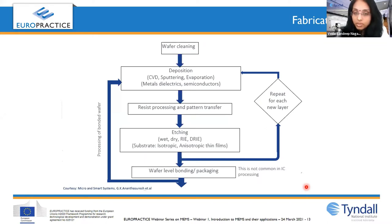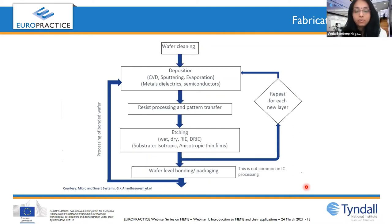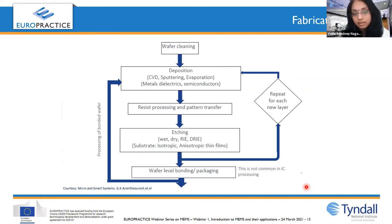These deposition, patterning, and etching steps are repeated for every layer in the device stack. An optional additional step not compatible with CMOS is wafer bonding, required when you want to attach layers that exist on two different substrates — for example, glass and silicon. Different methods exist: direct bonding, eutectic bonding, and others, depending on the application.